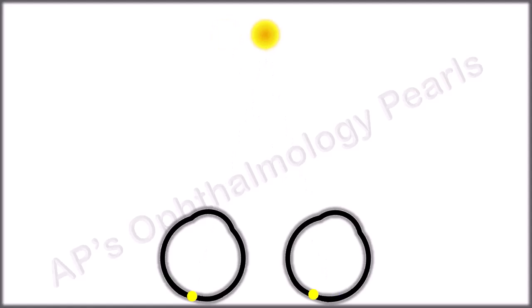In the same patient, a red glass in front of the fixating eye shows the diplopia in this manner.